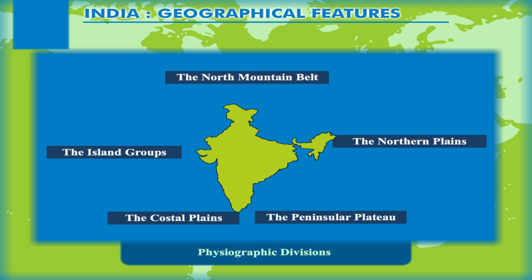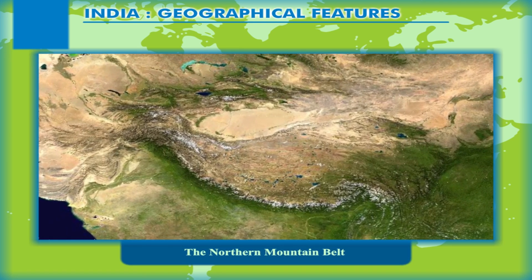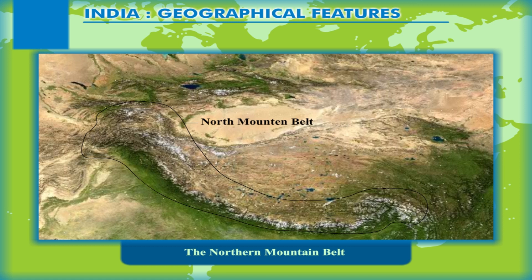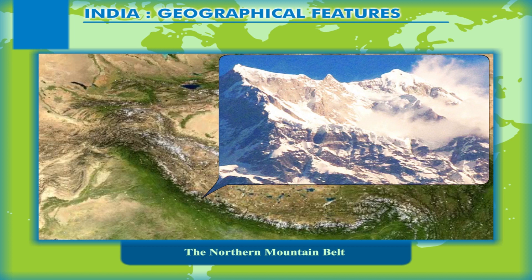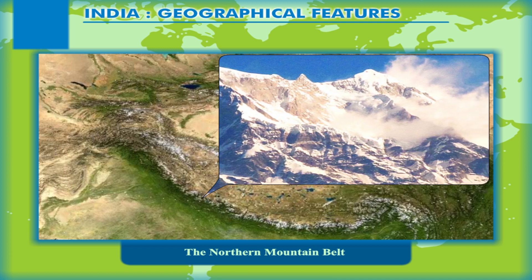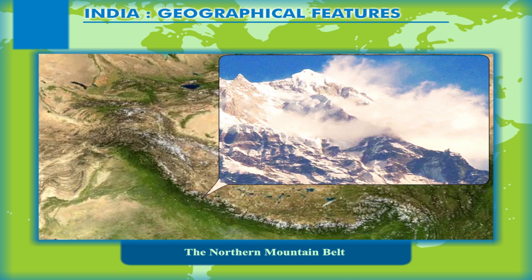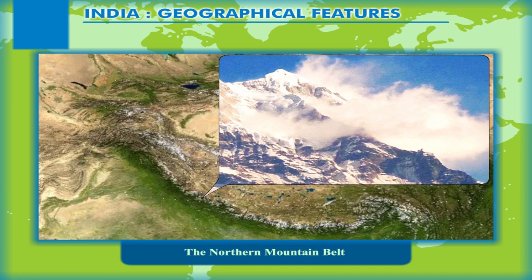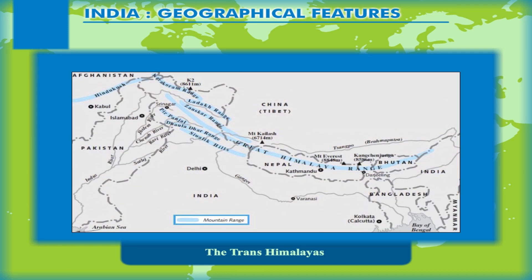The five divisions are: The Northern Mountain Belt, The Northern Plains, The Peninsular Plateau, The Coastal Plains, and The Island Groups. The Northern Mountain Belt marks the physical boundary of India in the north and separates it from the rest of Asia. Some countries that lie in the mountain belt share their borders with India. The Northern Mountains Belt mainly consists of mountain ranges that radiate from the Pamir Knot, which lies mainly in Central Asia to the north of India. These ranges extend in a southwest direction and run almost parallel to the political boundary of India.